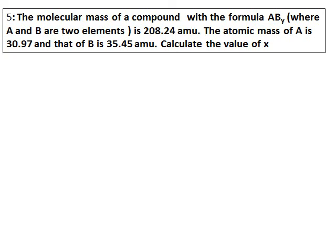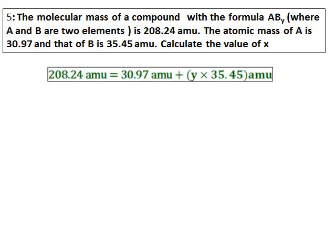The atomic mass of element A and the atomic mass of element B are given; we are asked to calculate the value of x. The total molecular mass equals one atom of A, given as 30.97, plus y atoms of B — so y times 35.45. Solving for y, we get y equals 5.